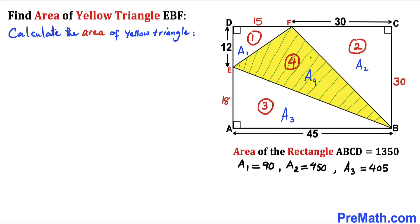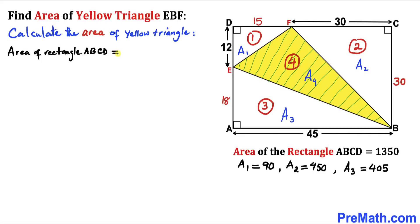Now for the final step, let's calculate the area of the yellow triangle EBF. The area of rectangle ABCD equals the sum of the individual areas of triangles 1, 2, 3, and 4. So: area of ABCD equals A sub 1 plus A sub 2 plus A sub 3 plus A sub 4. The area of rectangle ABCD is 1350 square units.